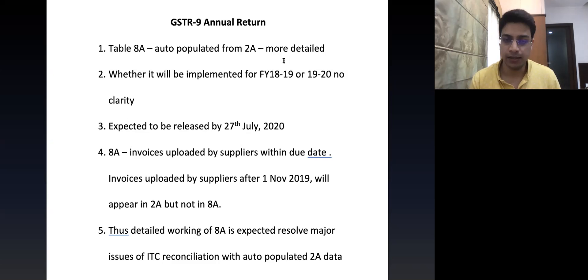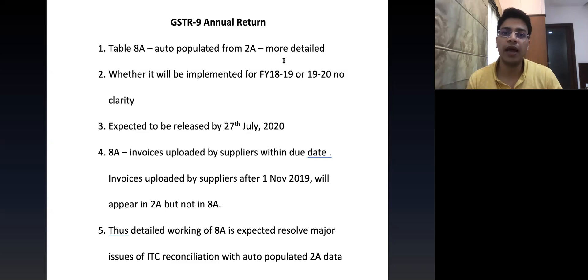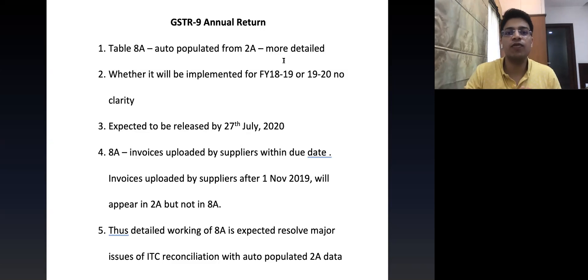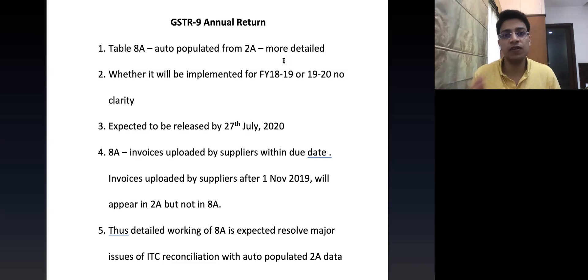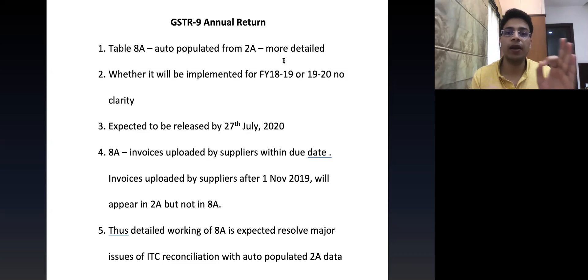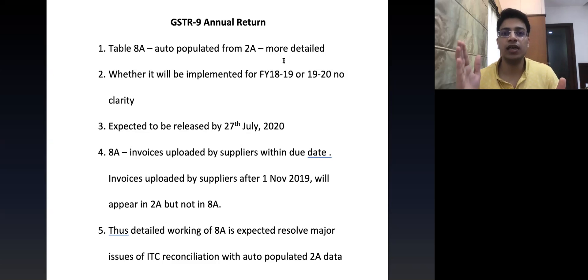Regarding Table 8A: if your suppliers have uploaded their sales data in GSTR-1 for financial year 2018-19 by 31st October 2019, that data will reflect in Table 8A of GSTR-9. If the suppliers uploaded the data after 31st October 2019, that data will appear in 2A but will not appear in Table 8A. For FY 2018-19, the data uploaded by your suppliers up to 31st October 2019 will be auto-populated in both GSTR-2A and Table 8A.